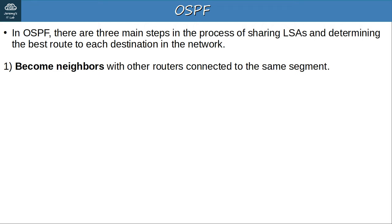Quiz question 3: Answer the following questions about the OSPF network shown. First, how many backbone routers are there? There are 4 — these routers all have at least one interface in the backbone area, area 0. Second, how many ABRs are there? There are 3 — these routers have interfaces in 2 separate areas. Third, how many ASBRs are there? Just 1 — this router connects the OSPF network to the Internet and likely advertises a default route into the OSPF domain.